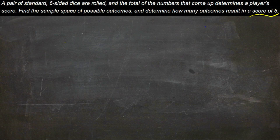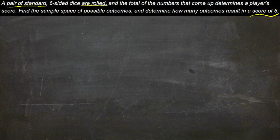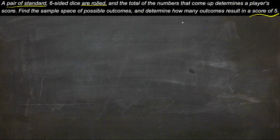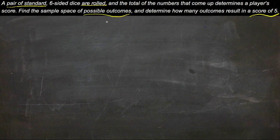So what we're trying to do is roll two dice, add up the numbers that we get, and see how many possible ways we could get five and how many different ways we could actually get numbers, period.